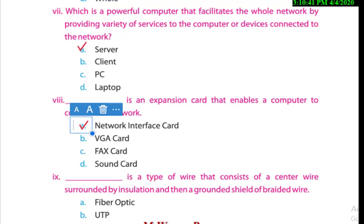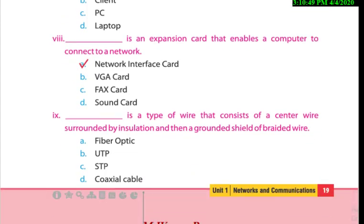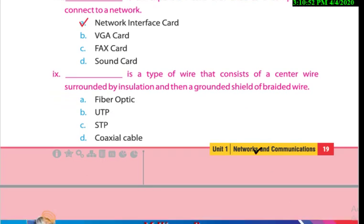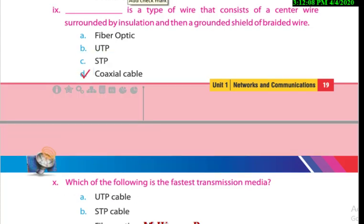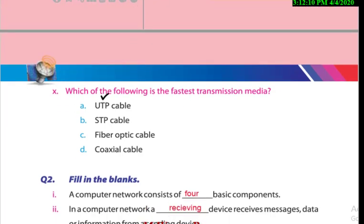Dash is a type of wire that consists of a center wire surrounded by insulation and then a grounded shield of braided wire. Which wire consists of a center wire surrounded by insulation and a grounded braided shield? This one is a coaxial cable. And which of the following is the fastest transmission media? Definitely, fiber optic cable is the fastest transmission media.